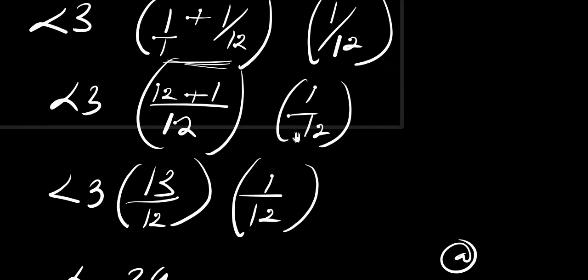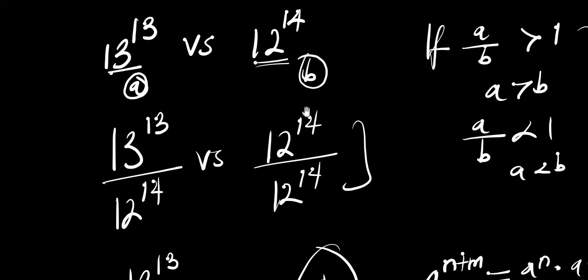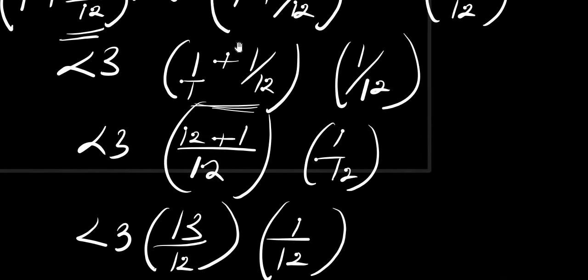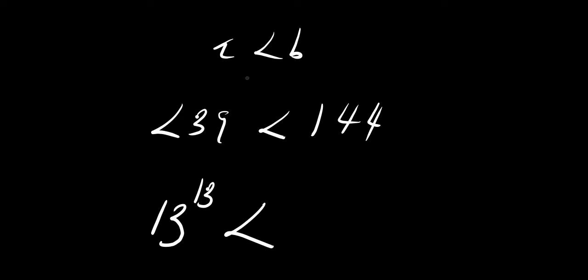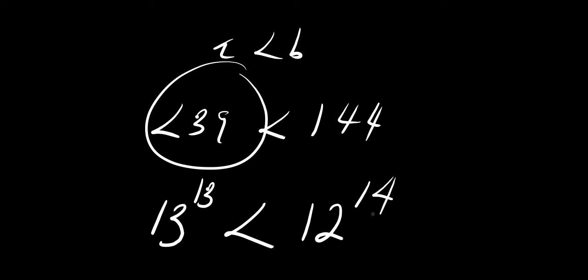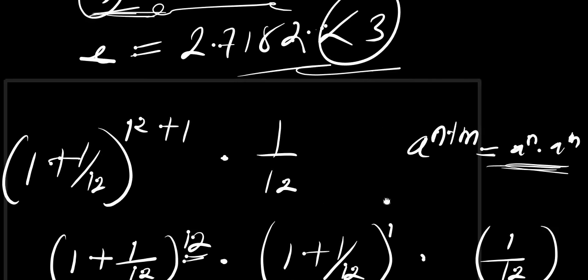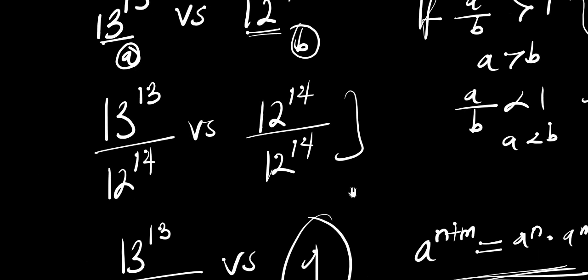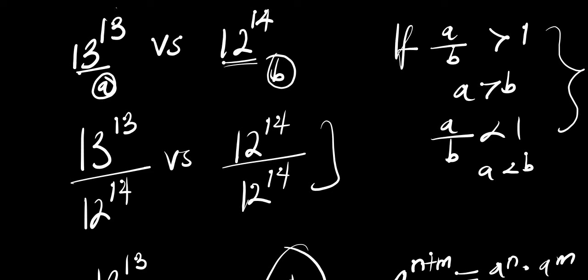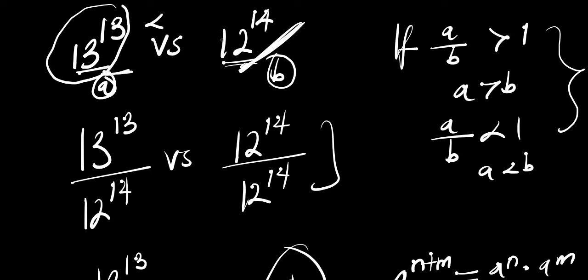Going back to our original problem, our a was 13^13 and our b was 12^14. So we conclude that 13^13 is less than 12^14. This means 12^14 is the bigger number. This is how you can carry out comparisons of this nature. Please kindly subscribe and share this video. Thank you and goodbye.